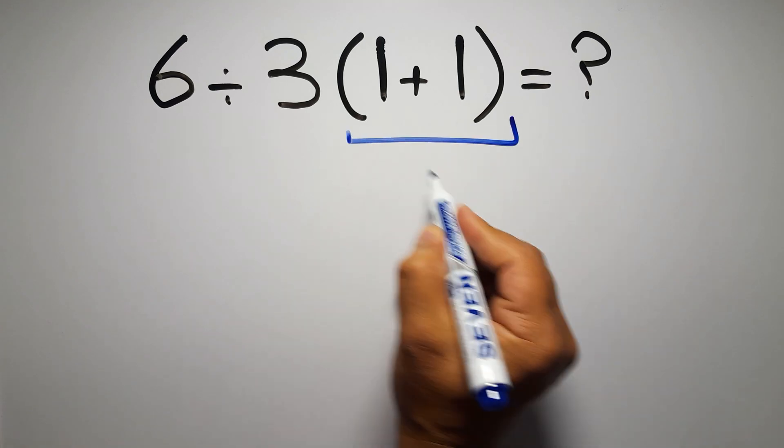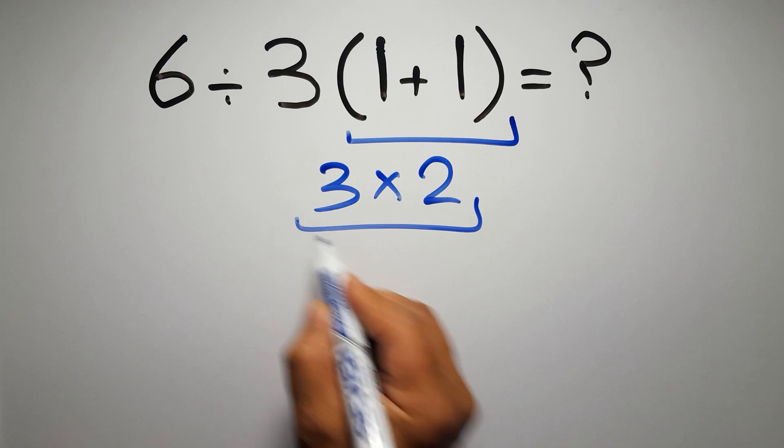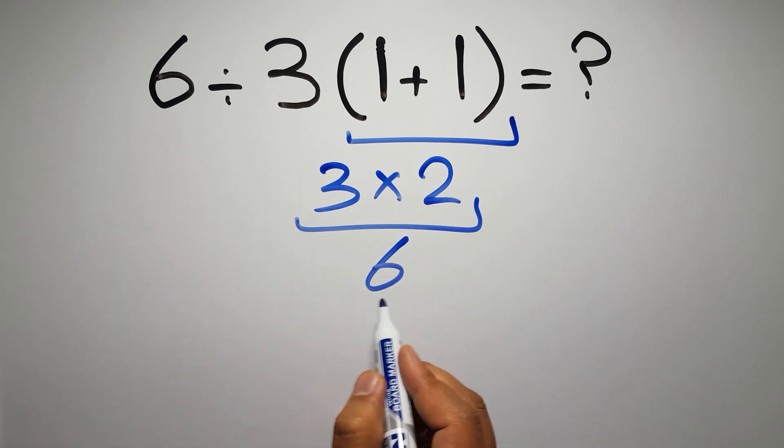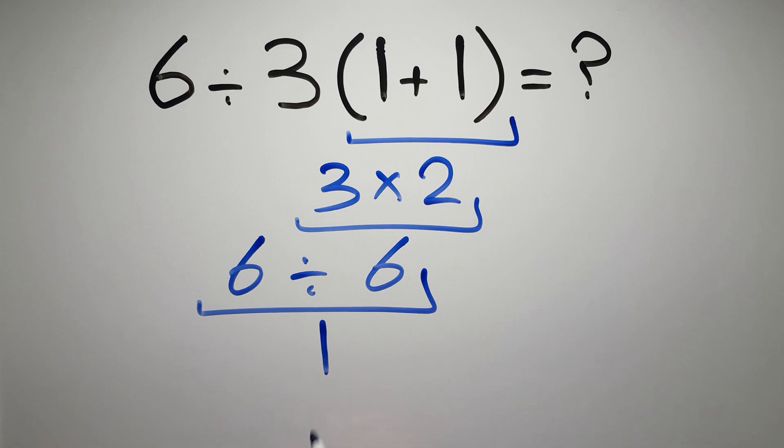1 plus 1 gives us 2, and 3 times 2 equals 6, so 6 divided by 6 is just 1. But this answer is not correct,